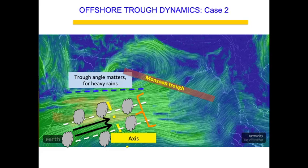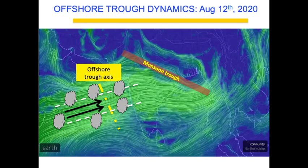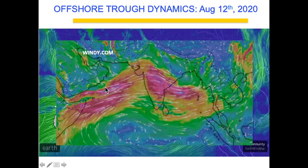When the monsoon trough moves north, aided by a Bay of Bengal system, the offshore trough becomes very strong. On August 12th, there were moderate to heavy rains over Mumbai and very heavy rains in the interior areas like Thane and Dombivli — this was because of a very active offshore trough. On the windy chart, the offshore trough is clearly visible in the Arabian Sea, with the monsoon trough pulling winds in. Somali Jet wind speeds were very high — almost 10 to 15 meters per second at some places — which pushes cloud bands much further inland.